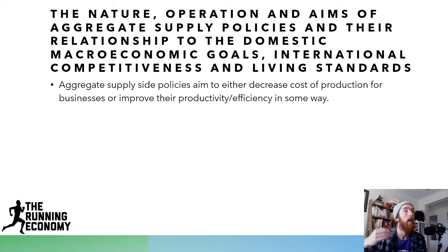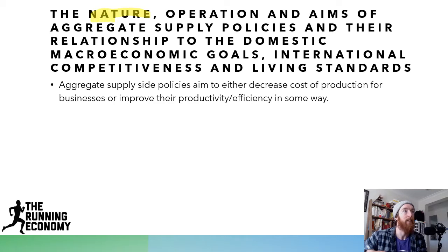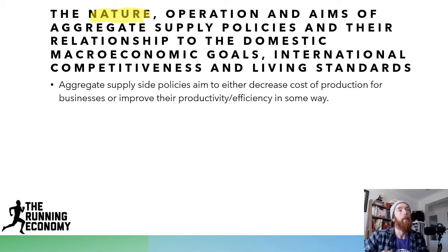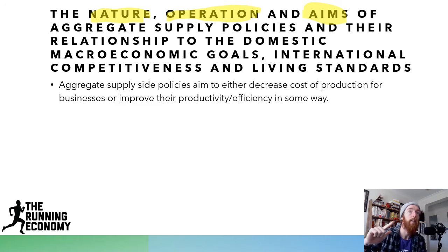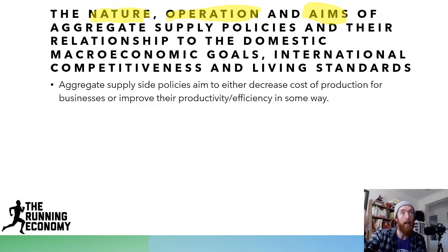So aggregate supply. We're getting into the nature, operation, and aims of aggregate supply-side policies. They are aiming to create favorable supply-side conditions for businesses to increase their productivity and aggregate supply. The operation is how they do that — we'll get into that with each of the different types of policies. The aims are to create those favorable conditions: either lower cost of production, increase productivity or efficiency, increase our production capacity, and therefore increase our overall aggregate supply.